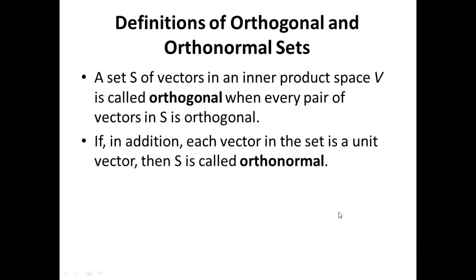Definitions. Number one: a set S of vectors in an inner product space V is said to be orthogonal if every pair of vectors in S is orthogonal, i.e. for every Vi, Vj in S, Vi dot Vj equals zero, or more generally, the inner product of Vi and Vj is zero. Secondly, if in addition each vector in the set is a unit vector, i.e. the norm is one, then S is said to be an orthonormal set.